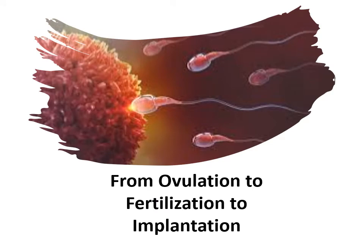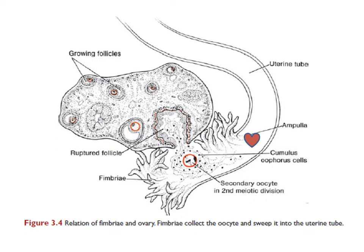The secondary oocyte surrounded by granulosa cells is carried into the tube by the sweeping movement of the fimbriae and by motions of the cilia in the epithelial lining. Once in the tube, the cumulus cells withdraw their cytoplasmic processes from the zona pellucida and lose contact with the oocyte. Once in the uterine or fallopian tube, the oocyte is propelled by peristaltic muscular contractions of the tube and by the cilia found in the tubal mucosa.